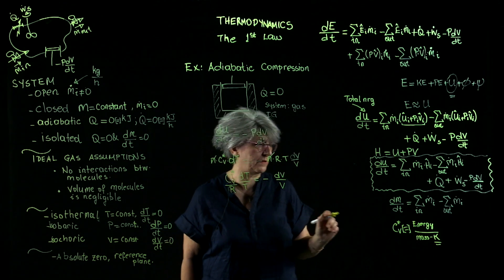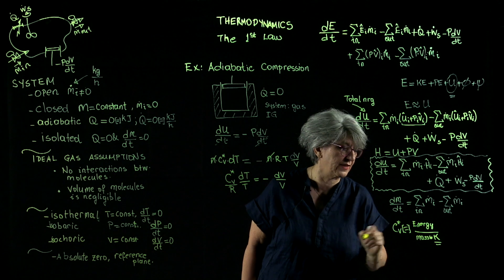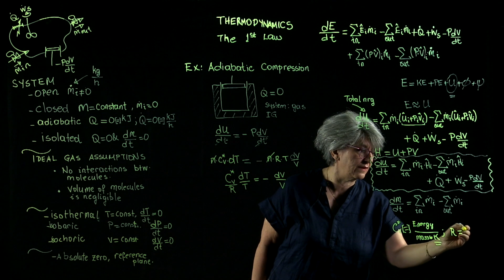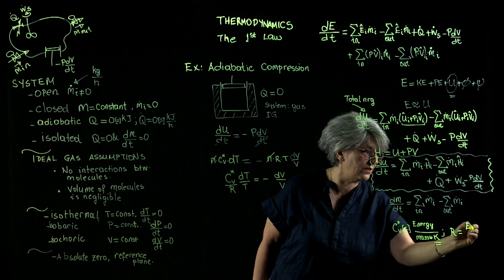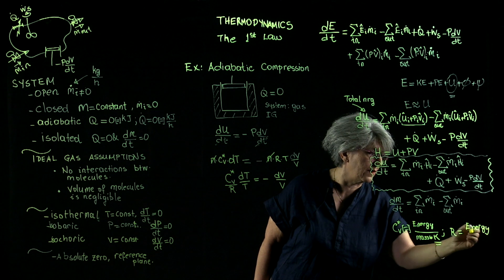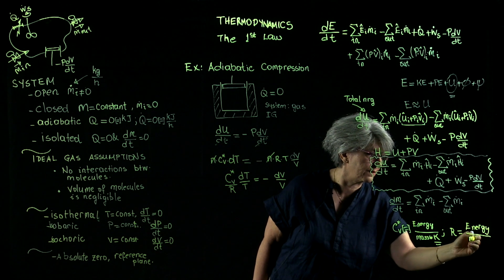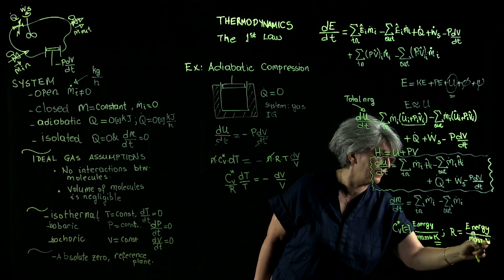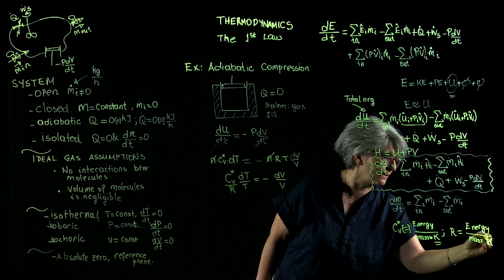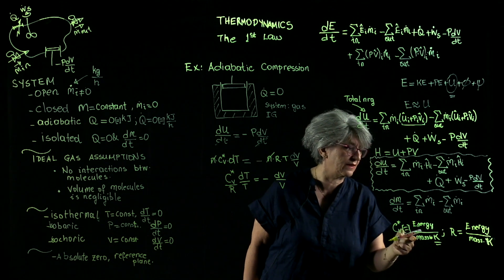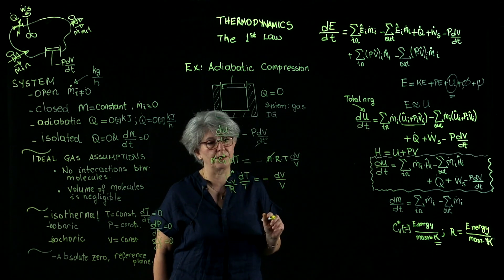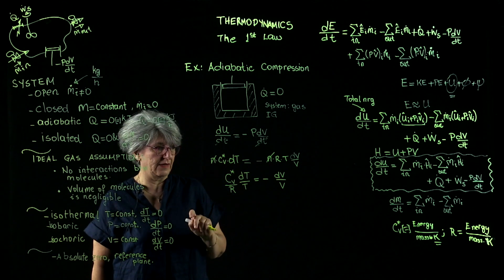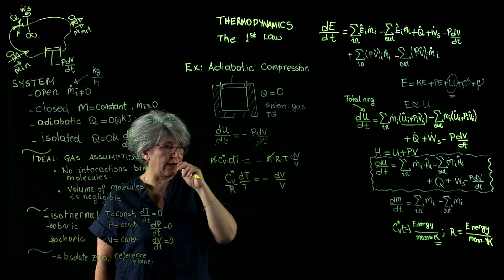Our ideal gas constant has the units of energy per unit mass, per unit absolute temperature, which is Kelvin. They are identical. They are in the same system of units. They cancel. This is completely a dimensionless system of equations. And now I integrate.